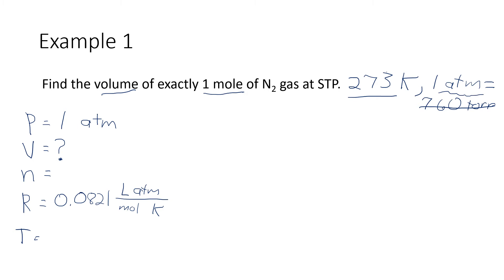N is how much gas we have, and it should be expressed in moles. And so this will be one mole. And then T is our temperature, which is 273 Kelvin.